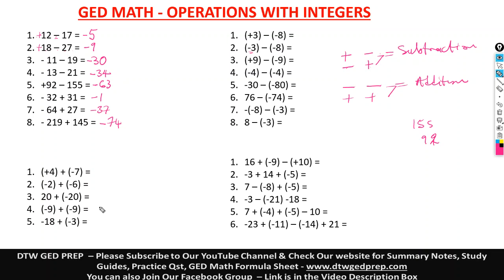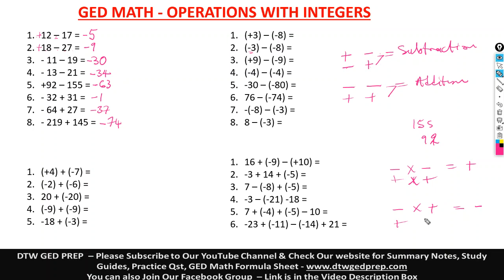Now, when you have parentheses, that is where we obey the multiplication rule: a negative times a negative is positive; a positive times a positive is also positive; a negative times a positive is negative; and a positive times a negative is negative.